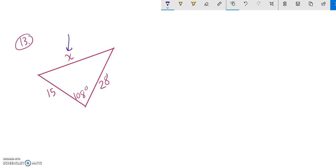So looking at this setup, I have side, angle, side. I know two sides, and I know the angle between them. So this is screaming out for law of cosines.